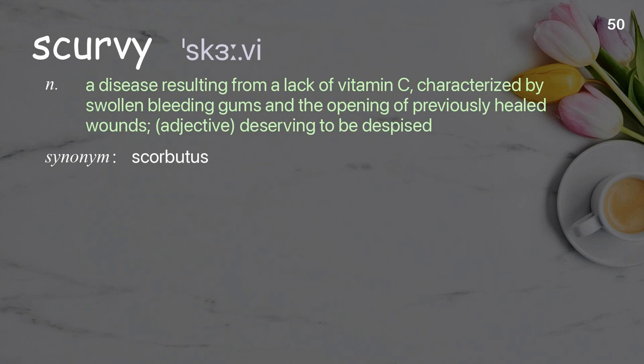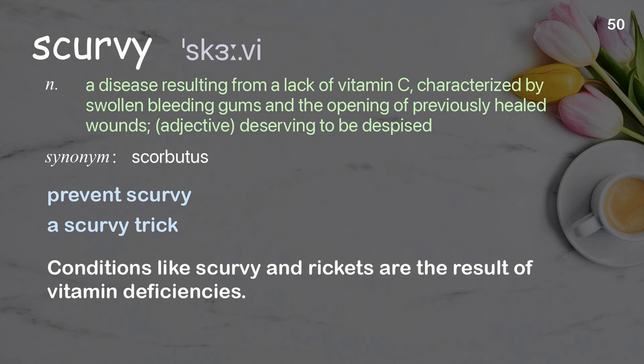Scurvy: A disease resulting from a lack of vitamin C, characterized by swollen bleeding gums and the opening of previously healed wounds; adjective, deserving to be despised. Examples: Prevent scurvy. A scurvy trick. Conditions like scurvy and rickets are the result of vitamin deficiencies.